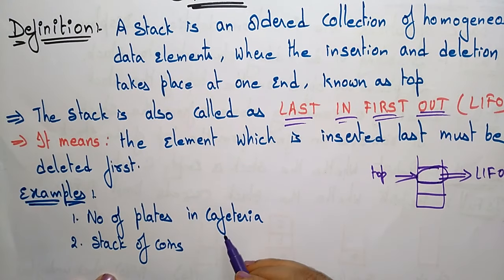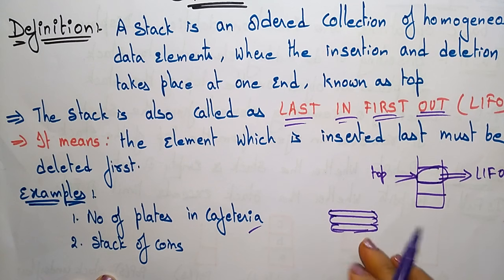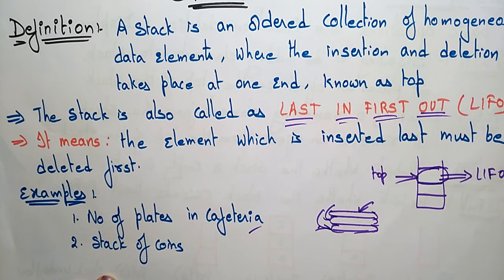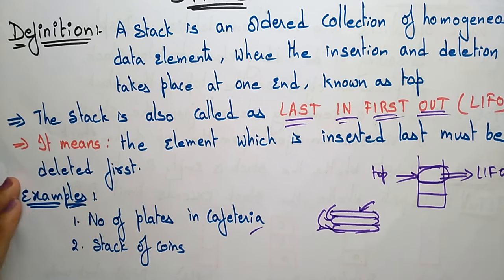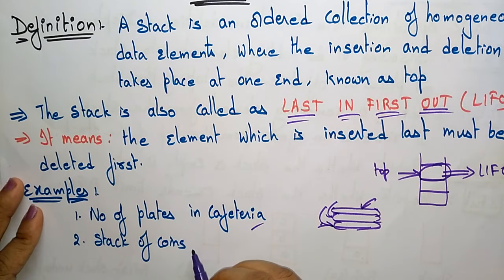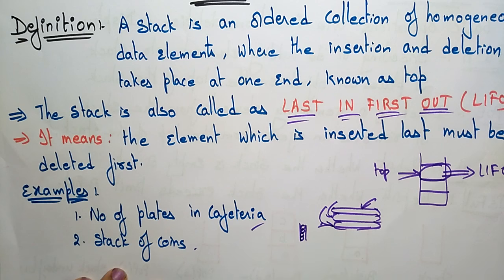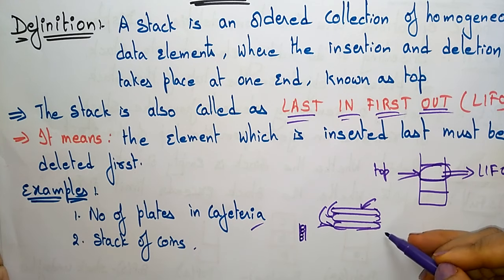Examples of a stack include a number of plates in a cafeteria. If you arrange plates, you take the topmost plate first, then the next, and so on. Similarly, we store data in memory in the form of a stack. Another example is a stack of coins — placing coins one above the other. The topmost coin is taken first, and new coins are placed on the top.